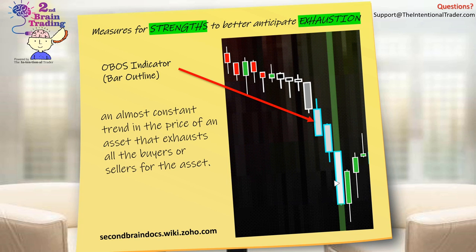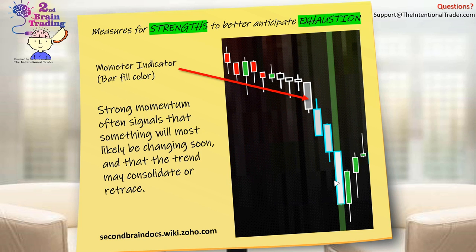It's an almost constant trend that the price of an asset exhausts all the buyers or sellers for that asset. Our Mometer indicator — you'll notice that the bar fill colors go from black to a lighter gray to almost white. We're measuring strong momentum. Strong momentum often signals that something will most likely be changing soon, and that the trend may consolidate, retrace, or pull back.